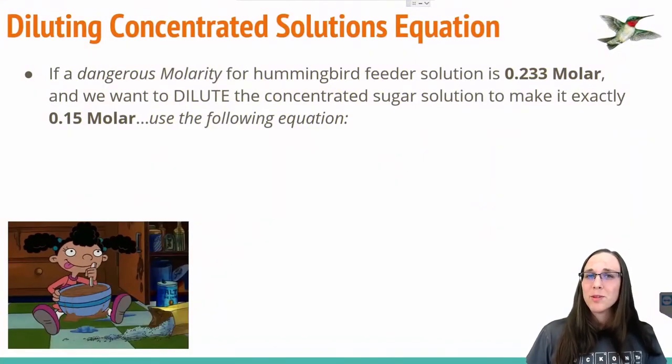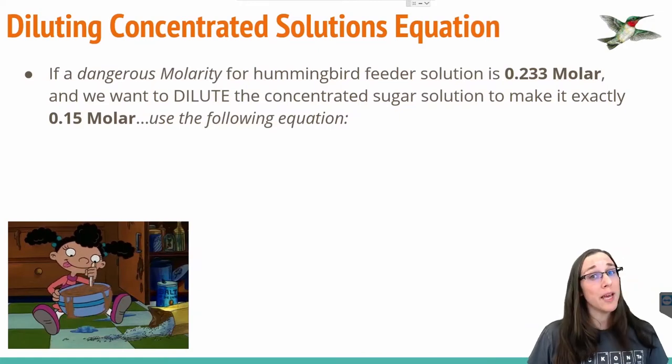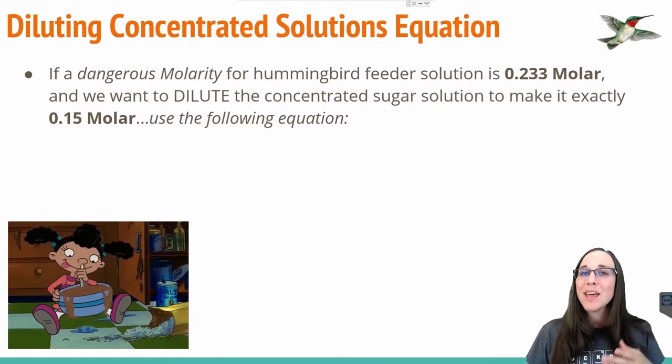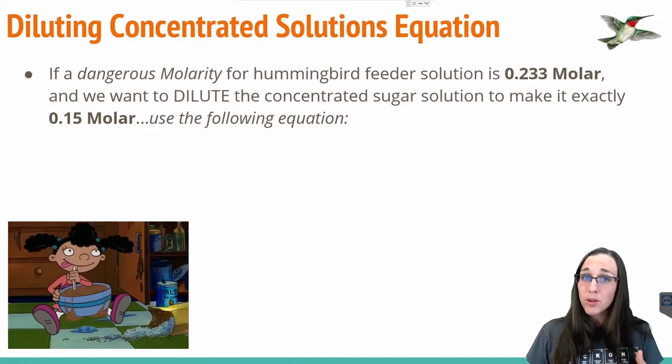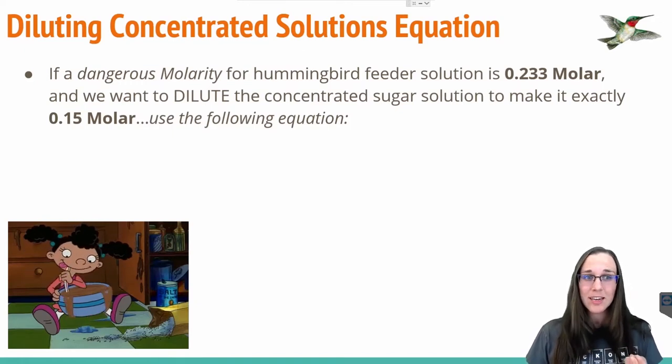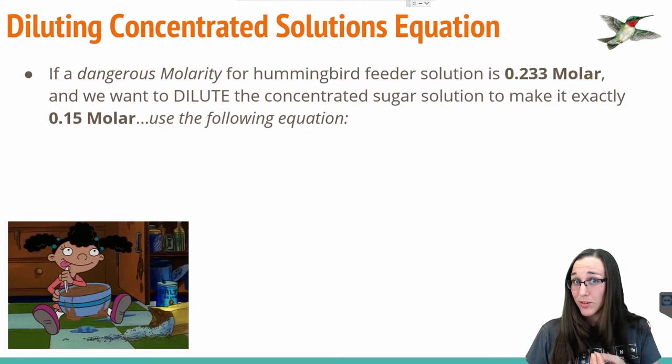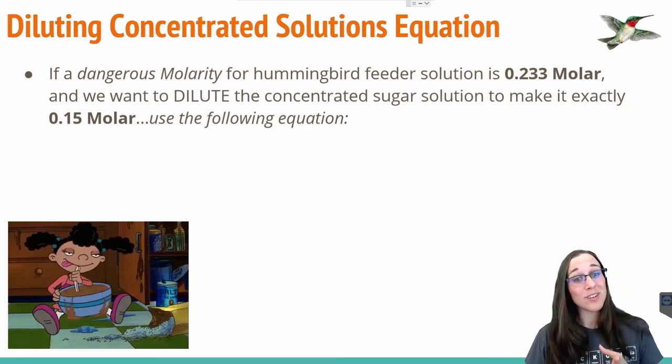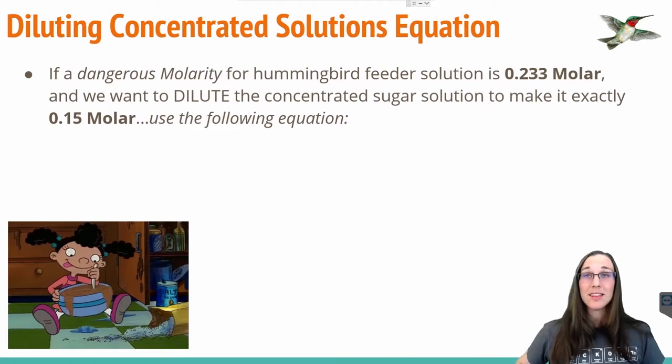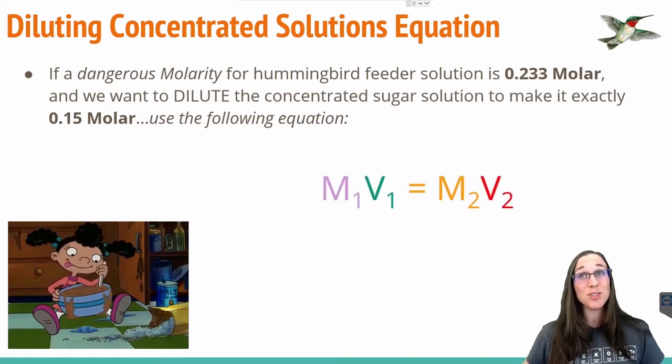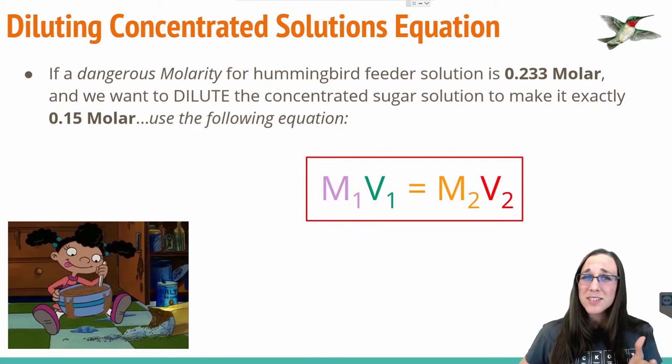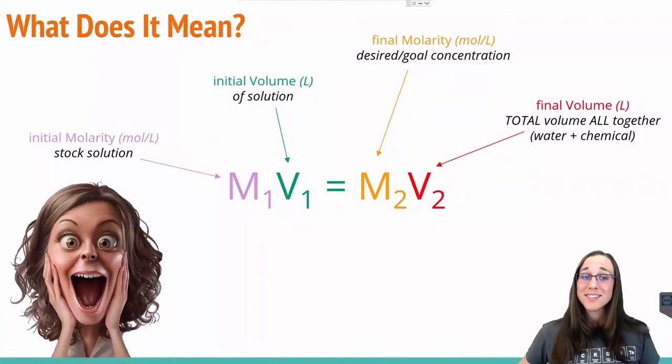So this is where that first problem you saw at the beginning of the video comes into play. If we had a supposed dangerous molarity of hummingbird feeder solution of 0.233 molar concentration we just calculated, and we need to dilute it in order to save the hummingbirds, and we need to make it 0.15 molar instead, we're going to use the M1V1 equals M2V2 equation. But what on earth does each piece of this equation even mean? I'm so glad you asked.